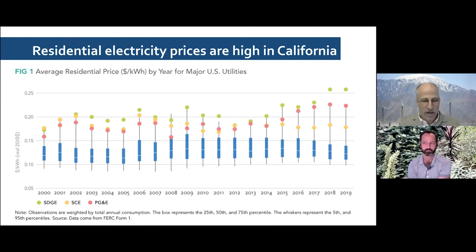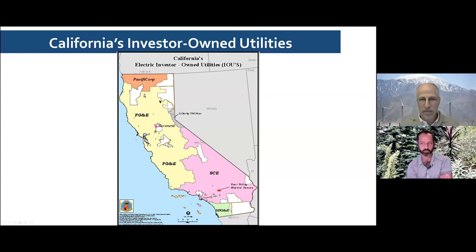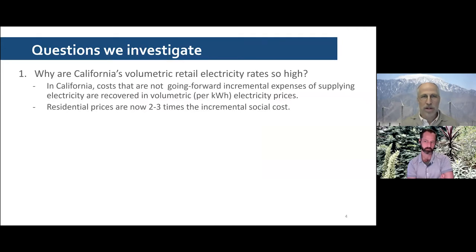We're going to focus on the three large utilities in California: San Diego Gas and Electric, Southern California Edison, and Pacific Gas and Electric. PG&E covers a huge amount of land and serves about 5 million customers. Southern California Edison serves about 5 million. San Diego Gas and Electric serves about 1.2 million. Pacific Core and Liberty are also on this map but each serve very few customers in less populated parts of the state.